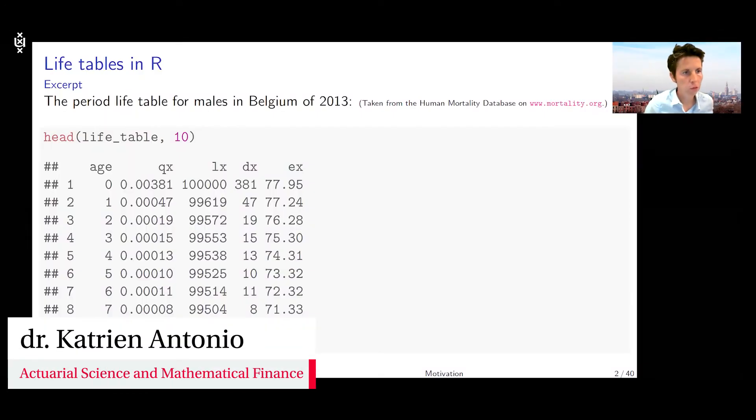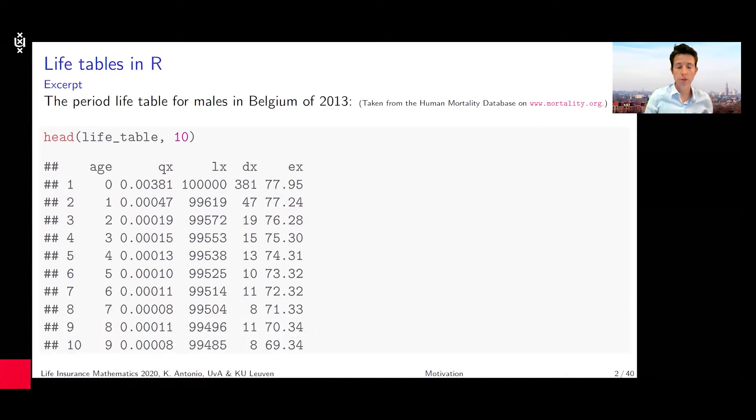What you see here on the screen is an excerpt from a life table, a life table for Belgian males from the year 2013. As part of chapter 3, we want to understand what the entries in such a life table refer to.